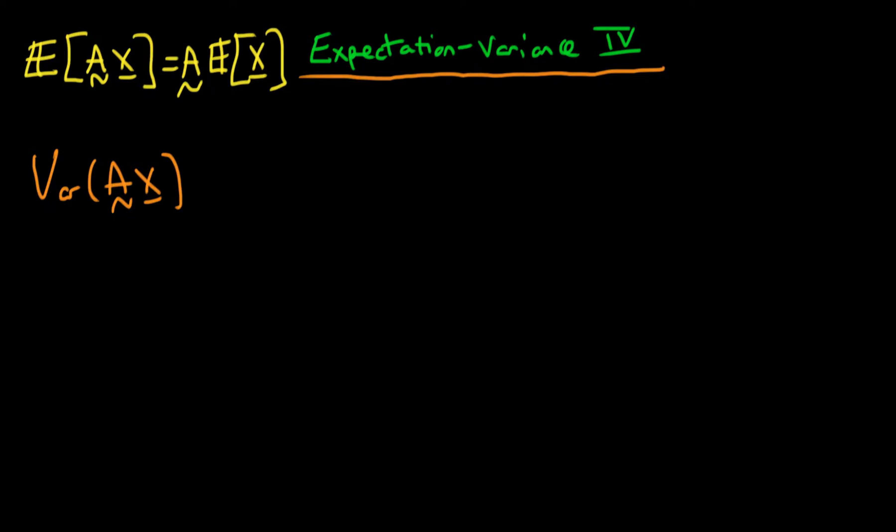Remember for the scalar case we found that the variance of a constant A times our random variable x was actually equal to A squared times the variance of x. So we're looking for an analogous form but for the case of a vector rather than a scalar.